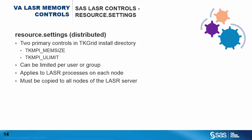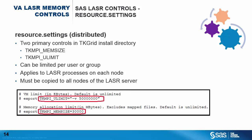TKMPI_ULIMIT is the amount of virtual memory to be consumed by each LASR process, and differs from TKMPI_MEMSIZE in that this value would include SAS HDAT datasets loaded from HDFS. The limits for both controls can be tailored for individual accounts, groups, or applications by modifying the resource.settings file. The resource.settings file is available on each of the distributed LASR nodes, and once updated, it must be copied to all LASR nodes. Setting TKMPI_MEMSIZE and TKMPI_ULIMIT in resource.settings is the preferred method of controlling memory on a distributed LASR deployment.